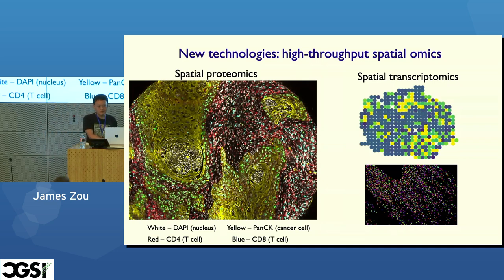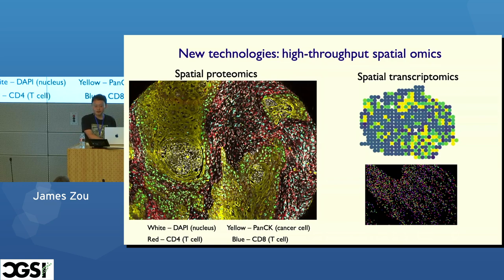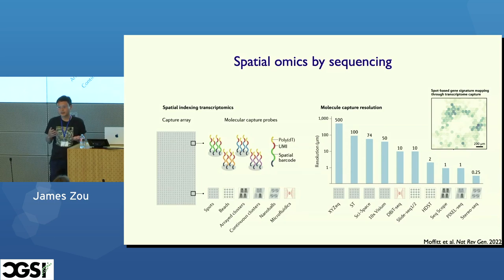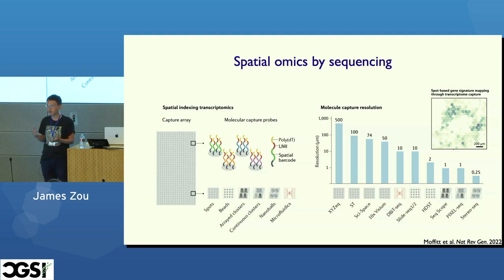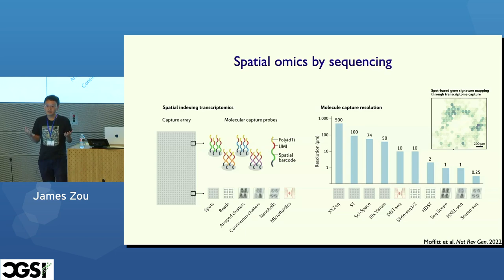I want to give a primer on the experimental side — how we actually go about measuring spatial proteomics and spatial transcriptomics — and then most of the presentation will focus on the computational method side: how do we model these kinds of data to derive useful biological insights? Broadly, there are two main ideas: spatial omics either by sequencing or by imaging.